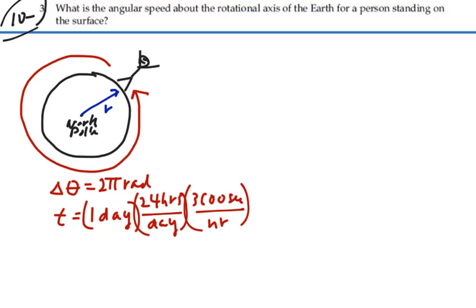So as we look at this, days will cancel out, hours will cancel out, and we'll get our total time here. 24 times 3600 is 86,400 seconds.